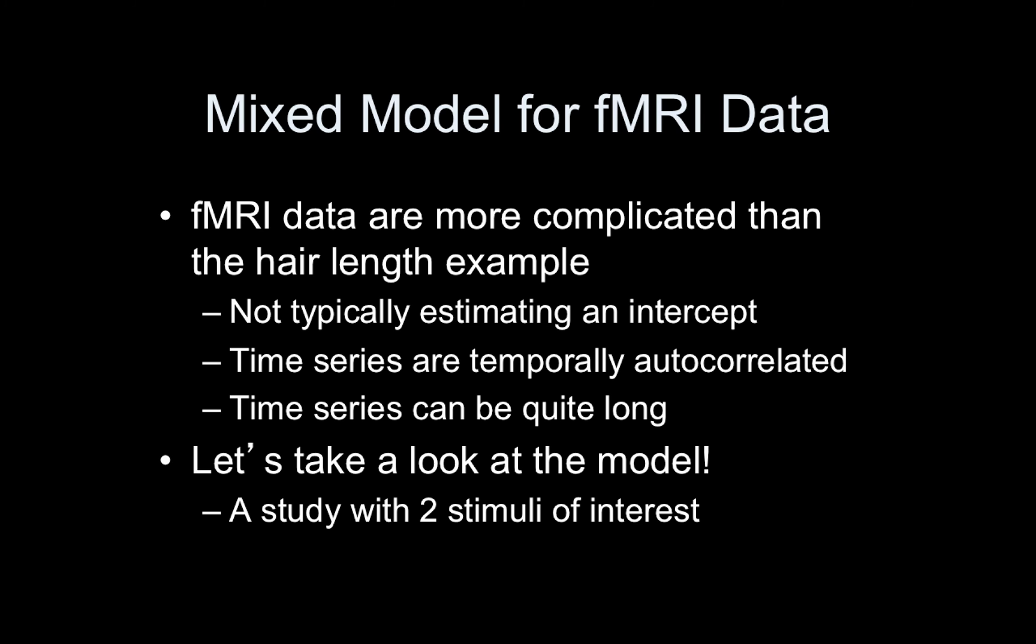Of course, as we've seen, especially in all the steps we had to go through for the level one models, fMRI data are far more complicated than the hair length data. We're not just typically estimating a simple intercept. We have some convolved regressor for our expected BOLD response that we're modeling. The time series, as we saw, are temporally autocorrelated. They're pretty long. So let's just look at what the model would look like, the all-in-one model with two stimuli.